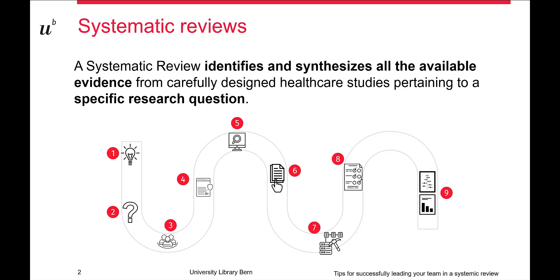There are many steps that are part of this methodology, but I can try to summarize them in nine points. Basically, everything starts with an idea — the first step. After that, the idea is refined into a precise research question, and then the researcher leading the project starts to create a team and identify literature in different sources, databases, and grey literature.